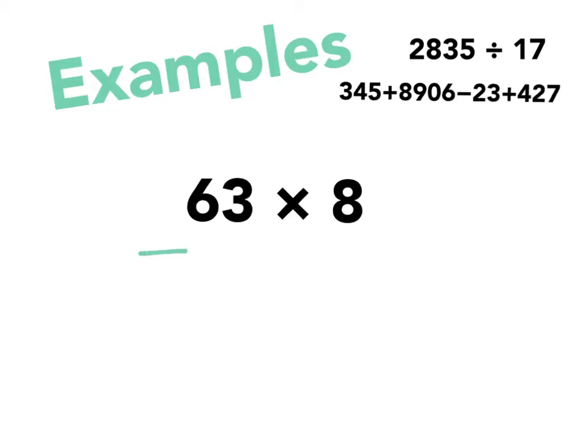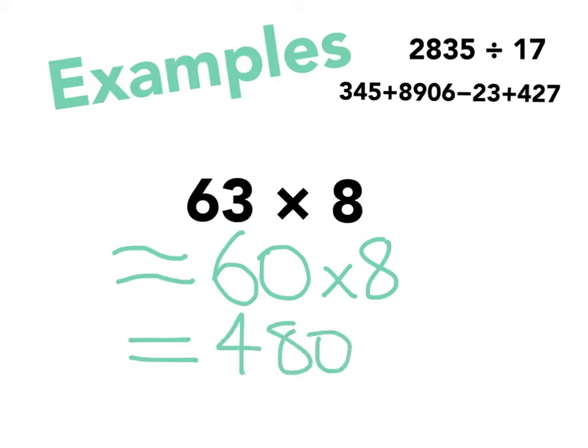Instead of writing equals, I draw these squiggle brackets to show I've roughly estimated. So 63 becomes 60 multiplied by 8. 60 × 8: well, 6 × 8 is 48, so 60 × 8 is 480. Much easier than trying to do 63 × 8 in my head.